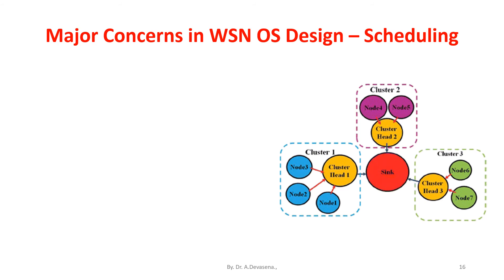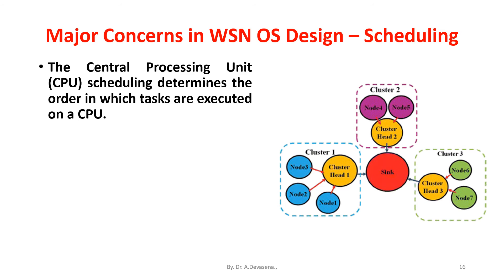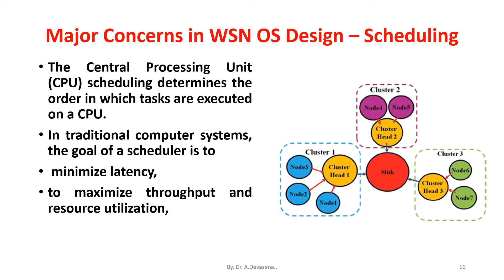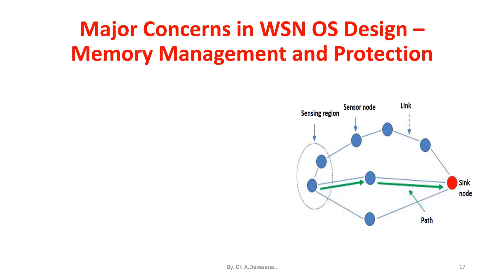Now we discuss the third concern: scheduling. CPU scheduling determines the order in which tasks are executed on the CPU. In traditional computer systems, the goal of the scheduler is to minimize latency, to maximize throughput and resource utilization, and to ensure fairness.